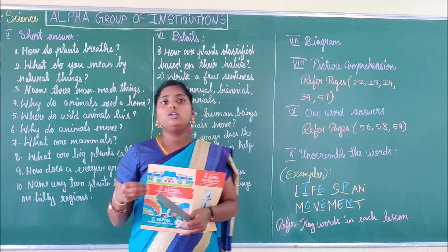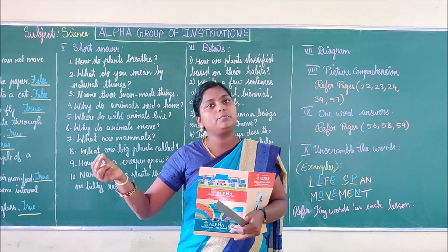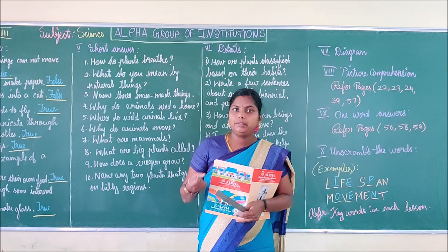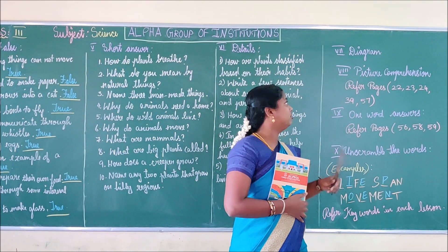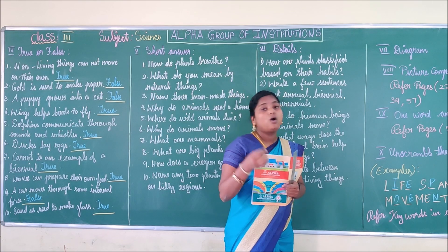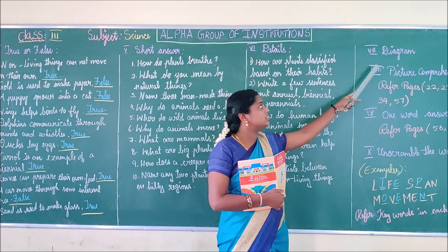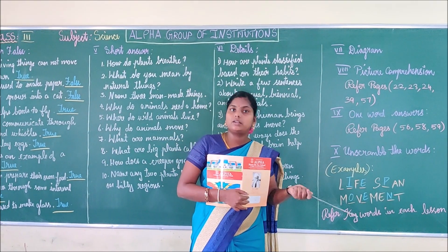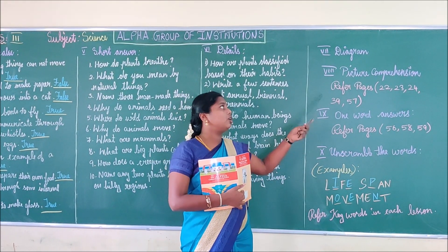For example, if asked to draw one animal for each food category: for herbivores, you can draw a cow; for carnivores, you can draw a lion or tiger; for omnivores, you can draw a human being. Read the question carefully and draw according to what is asked.